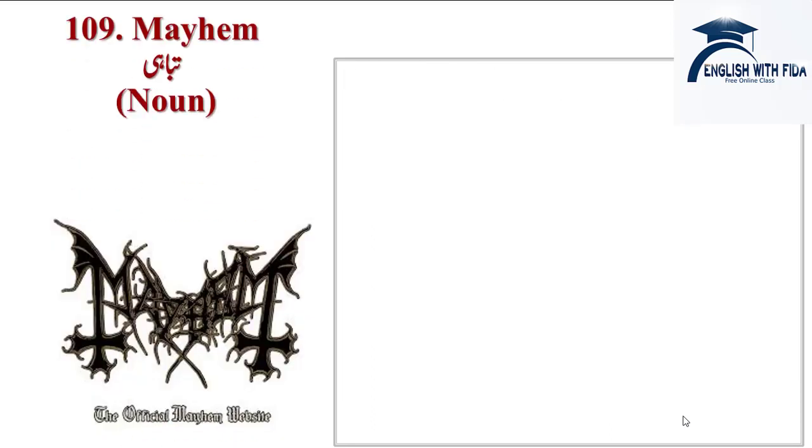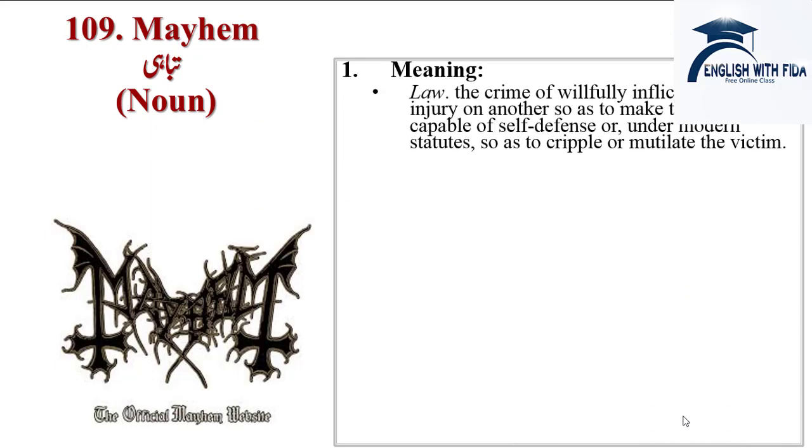Maim: the crime of willfully inflicting a bodily injury on another so as to make the victim less capable of self-defense, or under modern statutes so as to cripple or mutilate the victim.